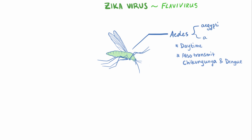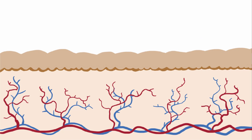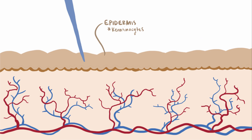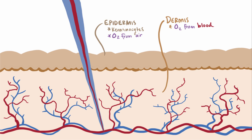When Aedes aegypti or Aedes albopictus, both species of the Aedes mosquito, lands on your skin and sticks in its long nose or proboscis, it pierces the epidermis, which is the topmost layer composed almost entirely of keratinocytes. Keratinocytes basically serve to protect against foreign pathogens, and they're typically pretty good at that. That proboscis keeps going into the dermis, since the epidermis just gets oxygen from the air and doesn't have its own blood supply, whereas the dermis does. Since the proboscis goes through both the epidermal and dermal layers, the cells in those layers are susceptible to infection by the Zika virus.